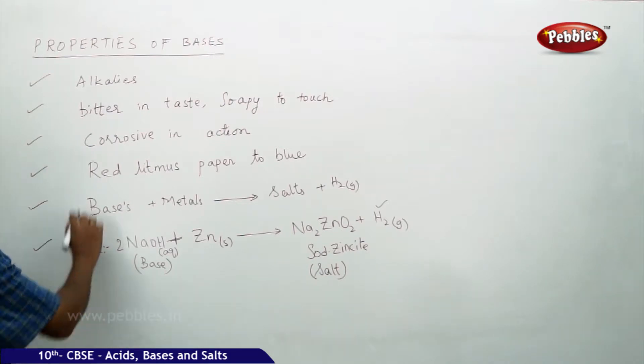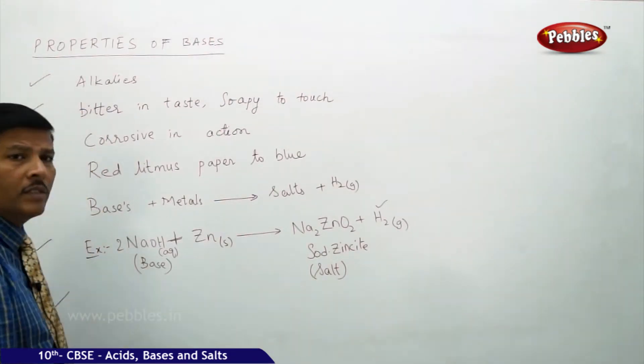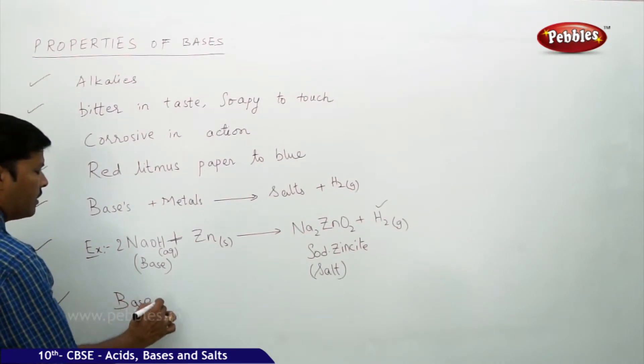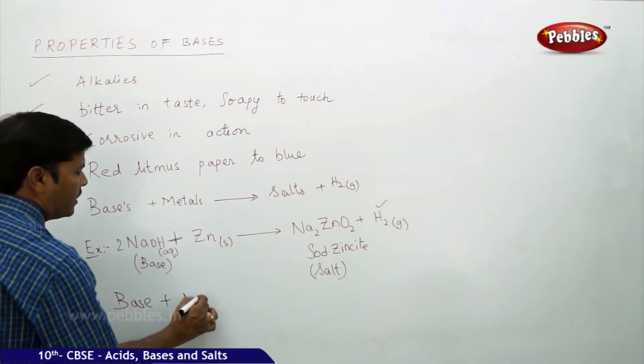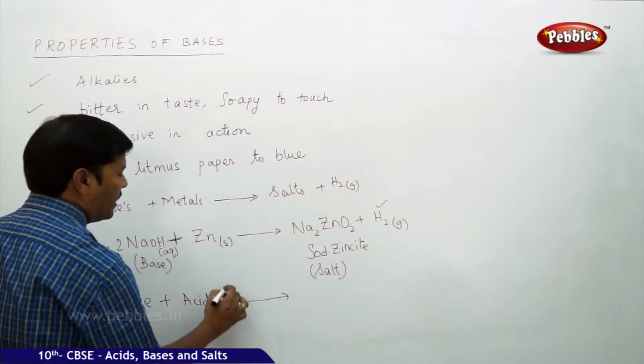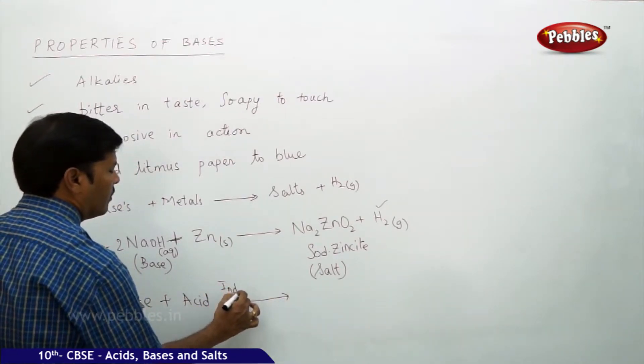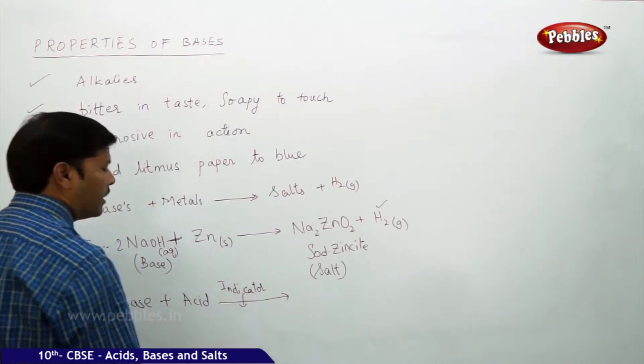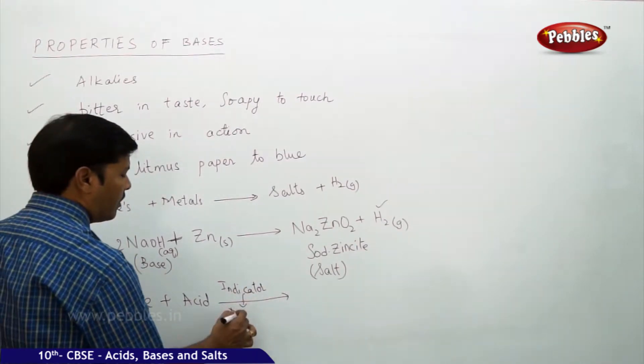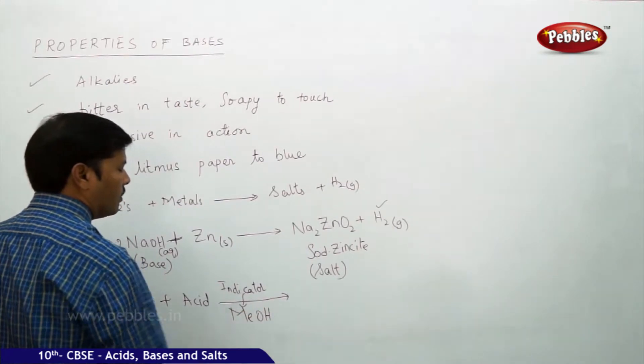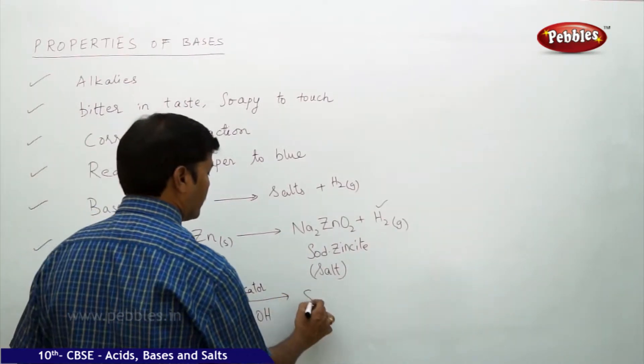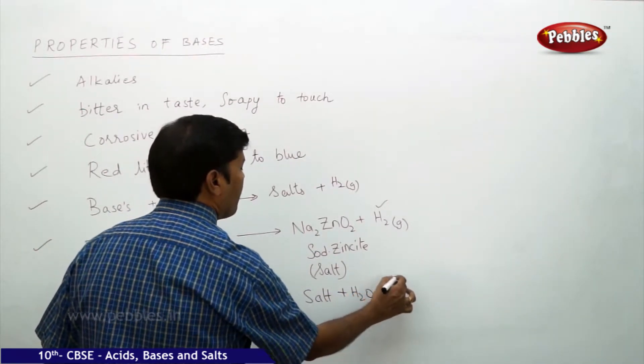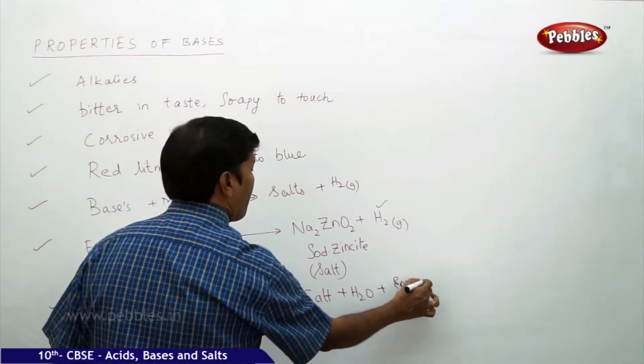What you are noticing is, always whenever we speak about the properties of bases, when a base reacts with acid, we add an indicator. That indicator is a synthetic indicator, MeOH, which gives salt plus water plus energy.